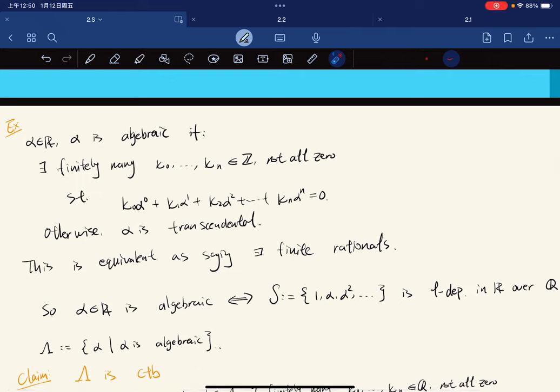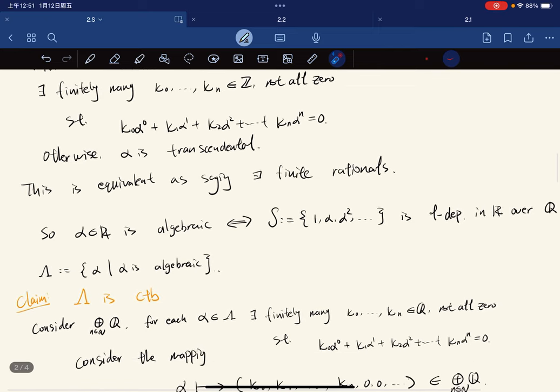Welcome to the tutorial. We're giving examples and exercises. A real number is algebraic if there exists finitely many integers, not all zeros, such that their linear combination equals zero. Otherwise, it's called transcendental. This is equivalent to saying there exists finite rationals. We observe that a real number is algebraic if and only if it is linearly dependent in R over Q.